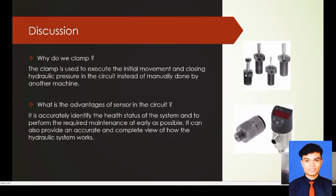And then, why do we use clamp? The clamp is used to execute the initial movement and causing hydraulic pressure in the circuit instead of manually done by other machine. And then, what is the advantage of sensor in the circuit? It is accurately identified the health status of the system and to perform the required maintenance as early as possible. It can also provide an accurate and complete view of how the hydraulic system works.